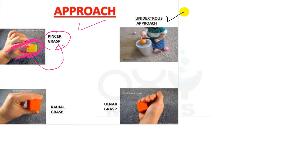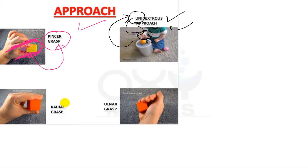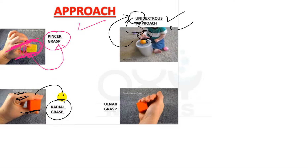What is unidextrous grasp or unidextrous approach? It is very simple. If a baby is holding any object with only one hand, as you can see here, then it is called unidextrous. Uni means single — single hand. And then coming to radial grasp: radial grasp is a grasp in which the baby holds something with the index finger, middle finger, and thumb.